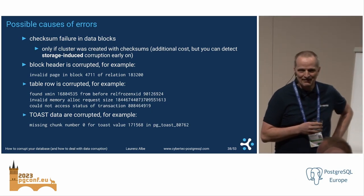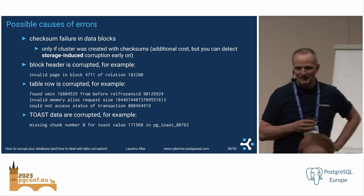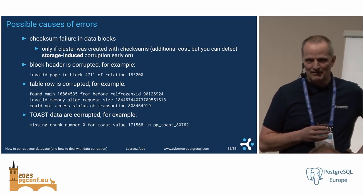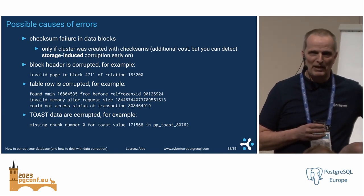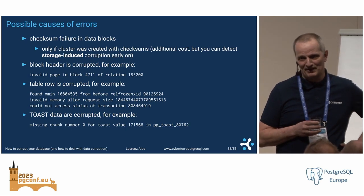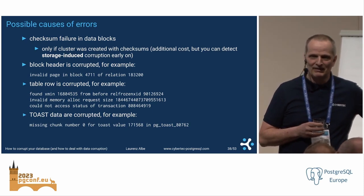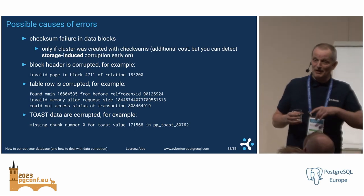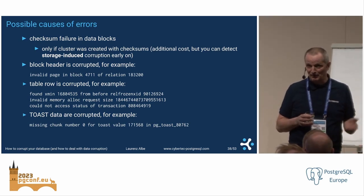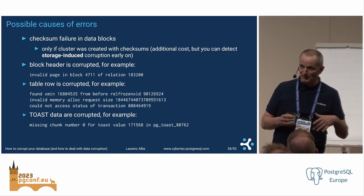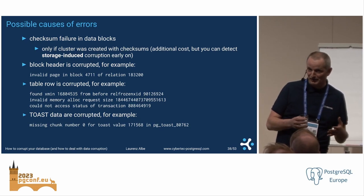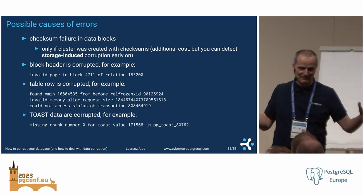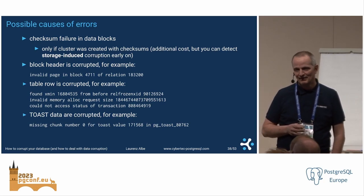Q: Which kinds of data corruption replicate to a replica — all of them or some? A: If you delete a file on the primary, that doesn't get replicated. But many things do. And even if something isn't directly replicated, you change the state in your primary, do more data modifications, and those changes will replicate. So it spreads — typically.